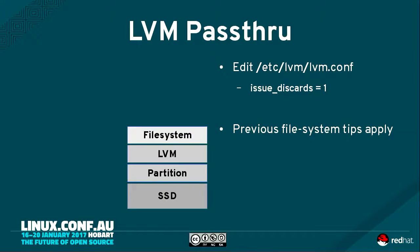Next layer up: put LVM in the way. Enable discards in your LVM.conf and then it should behave nicely. Fairly simple — everything else applies. We're just throwing another layer in, and everything you've learned before still makes sense.